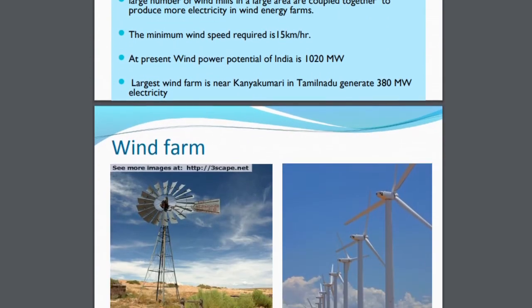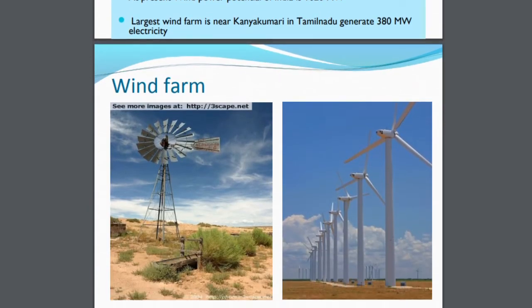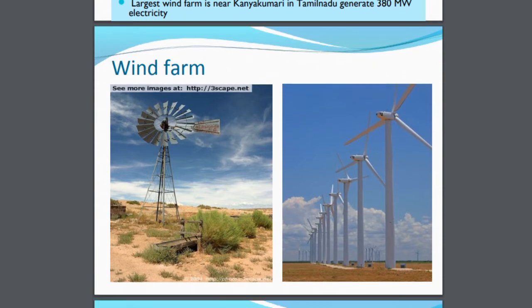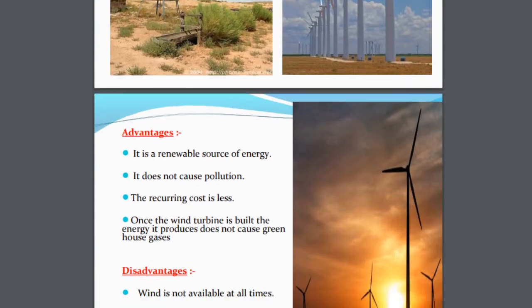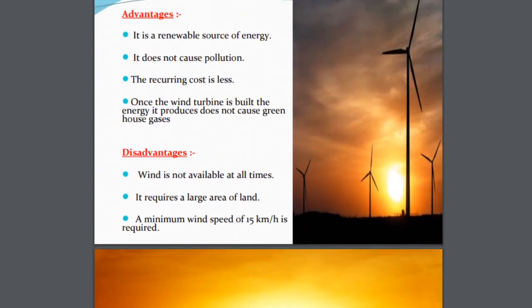Now we talk about some pictures of the wind farm. You can see that there is a series of windmills with rotors one after another, and they can change direction depending upon the direction of the wind. The first picture shows a more traditional style of windmill. This is a picture of a wind farm.